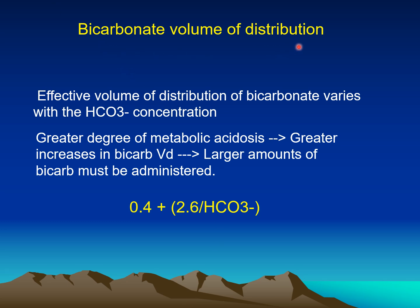The volume of distribution of bicarbonate in the body is the extracellular compartment, which is 20 percent of total body weight. However, the effective volume of distribution of bicarbonate varies with bicarbonate concentration. A greater degree of metabolic acidosis is associated with a greater increase in the bicarbonate volume of distribution, meaning we need a larger amount of bicarbonate. That's why we use the formula: 0.4 plus 2.6 over the measured bicarbonate.